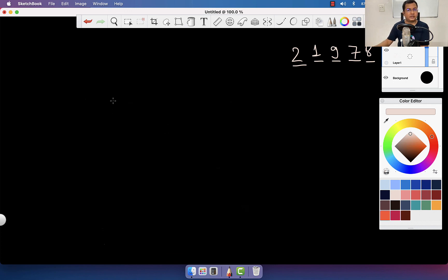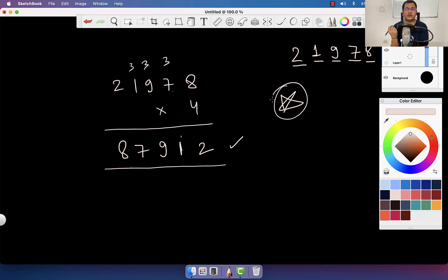21978 times 4: 8 times 4 is 32, carry 3. 7 times 4 is 28 plus 3 is 31, carry 3. 9 times 4 is 36 plus 3 is 39, carry 3. 1 times 4 is 4 plus 3 is 7. 2 times 4 is 8. We get 87912. There we have it: a five-digit number which when multiplied by 4 gives its reverse. So fun!